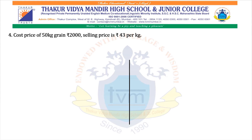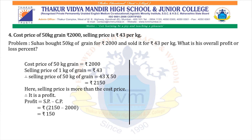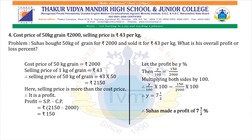Question 4: cost price of 50 kg grain is Rs. 2000 and selling price is Rs. 43 per kg. Problem: Suhas bought 50 kg of grain for Rs. 2000 and sold it for Rs. 43 per kg. What is his overall profit or loss percent? Solution: CP = Rs. 2000. SP of 50 kg = 43 × 50 = Rs. 2150. Since SP > CP, it is a profit. Profit = 2150 − 2000 = Rs. 150. Let profit be Y percent. Then Y/100 = 150/2000. Multiplying both sides by 100, Y = 7½. Therefore Suhas made a profit of 7½ percent.